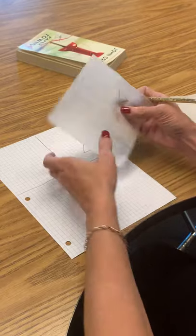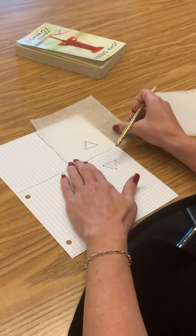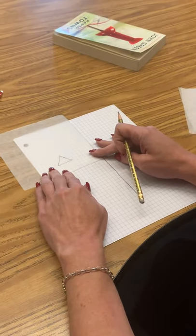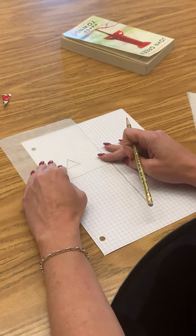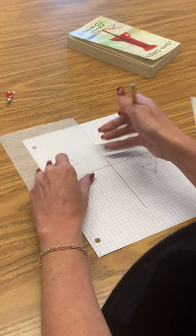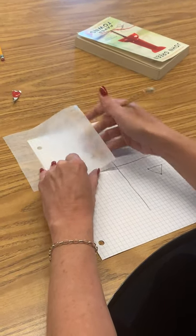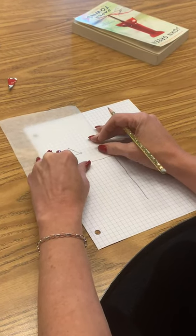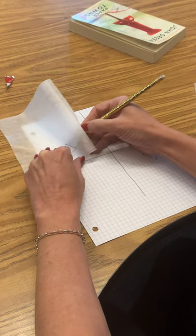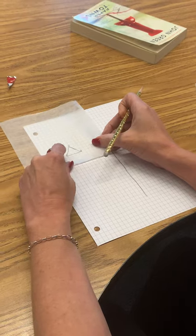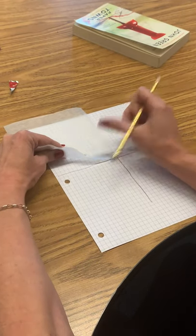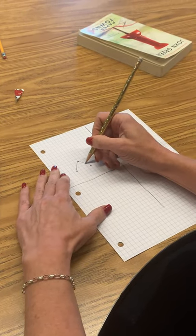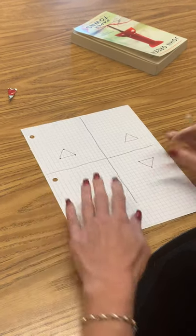Now we could take our paper again and this time we could reflect it over the y-axis and line it up and do the same process of lifting up the paper and seeing where it is right there, lifting it up and drawing the point, and checking making sure you have it right. Lifting it up and drawing the point, and now we have successfully reflected this over the y-axis.